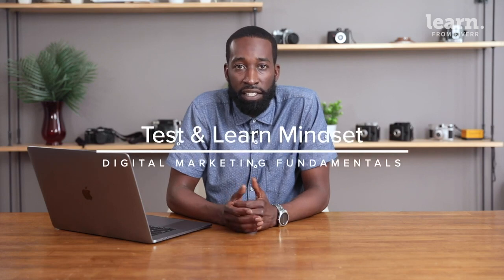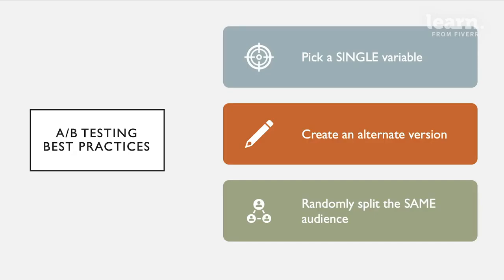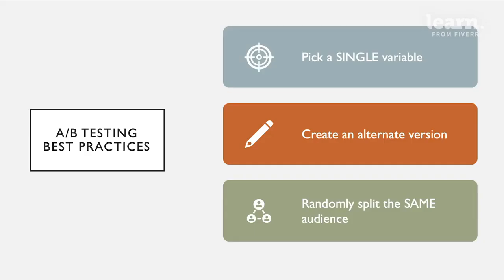When designing an A/B test, you need to focus on one element that you're going to change and keep all other elements the same, so you can have high confidence in what drove any difference in results. Specifically, the best practices would include: pick one single variable to change and change nothing else.